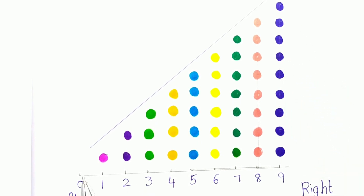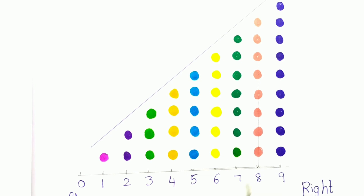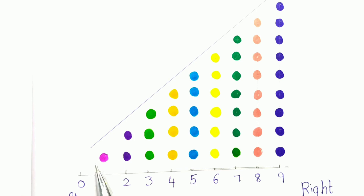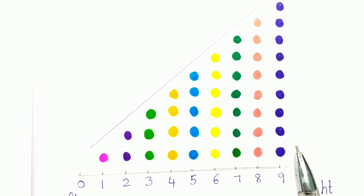So when we are moving from left to right, the number is becoming bigger. The number which is on the left side is smaller than the number which is on the right side. So the left side number is smaller and the right side number is the bigger number.